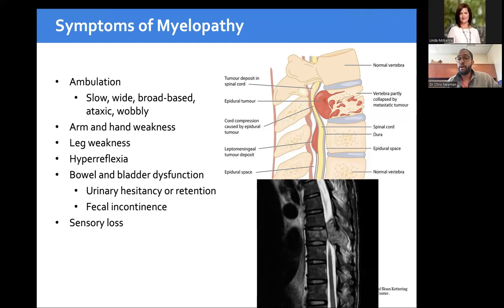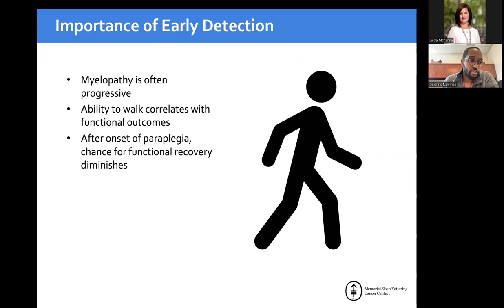Patients with a T6 lesion will have a sensory level somewhere below the nipple line; a T10 lesion near the umbilicus. These sensory levels help localize the offending level. Early detection is critical — if you catch people before they completely lose the ability to walk, you have a higher likelihood of maintaining or regaining that ability. When people have been down for 48 hours, the chance of recovering function goes down significantly.